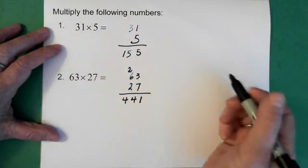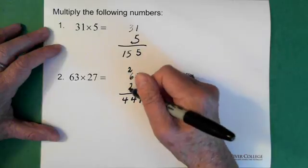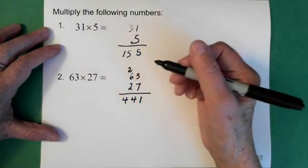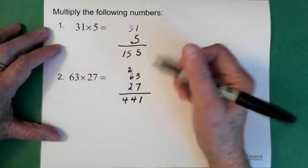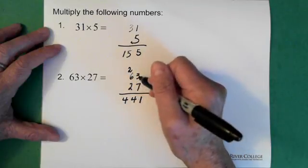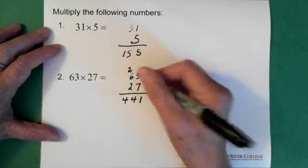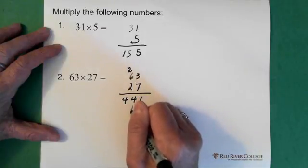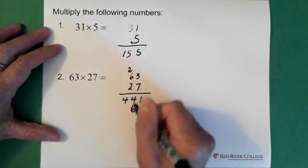Now what I do is I take the 2 and multiply it by those 2 numbers again. So 2 times 3 is 6.